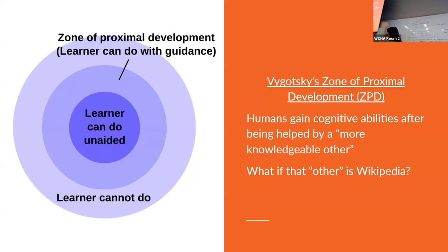I teach first-year writing composition — English 101 — and those students even have trouble choosing essay topics. When you put Wikipedia editing on top of that, they don't have confidence about what to write. Not having the confidence that 'you know a lot' is one problem, and then on top of that all the editing technology and processes you have to know to edit an article on Wikipedia — those two things complicate each other. They don't have the tools to choose a topic, much less choose a topic on Wikipedia, and then learn all of the editing process on top of it. It's complicated and there's a risk of burning out.